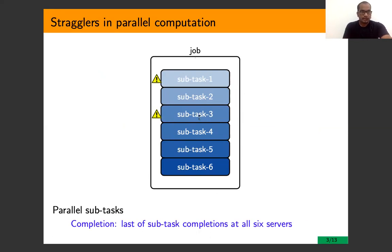When a job is divided into six sub-tasks and assigned each onto a unique server, the completion time of a job is the largest completion of all six server times. The problem with this setup is that the slowest sub-tasks are determining the job execution time, and these slowest sub-tasks are called stragglers. The key challenge in cloud computing is the problem of straggling servers, which can significantly increase the job completion time.